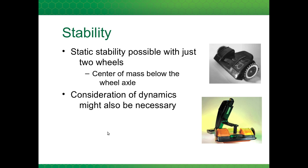Stability is one characteristic governed by the wheel configuration. It's possible to get static stability with just two wheels if you have the center of mass below the wheel axle. However, with this type of configuration, dynamics often need to be considered — which might not be the case with the Ackerman configuration. For example, if this robot brakes too suddenly, it could flip over.